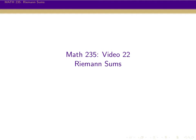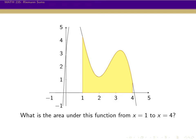Hello, everyone. This is Dr. Webb, and welcome to this Calculus 1 video. So let's start this video off with a question. Here we have a graph of a function, and we want to try and figure out what's the area under this function, above the x-axis — this yellow area. This is the area under the function from x-values 1 to 4.